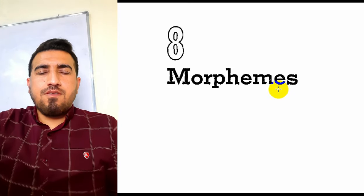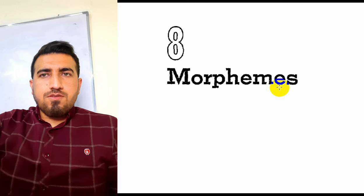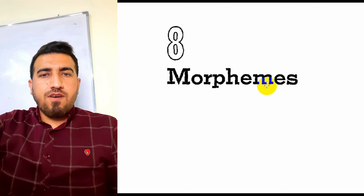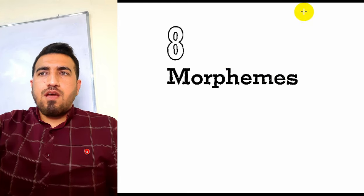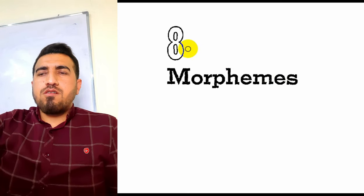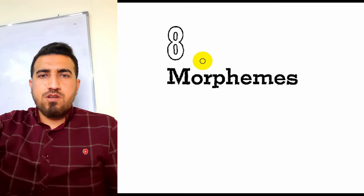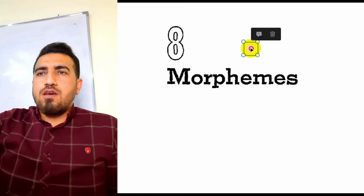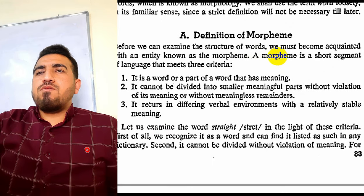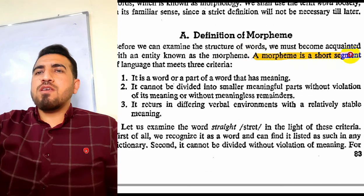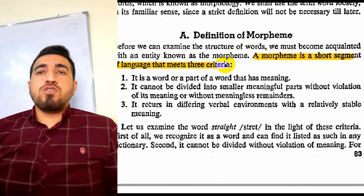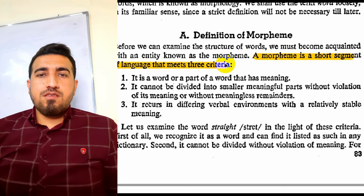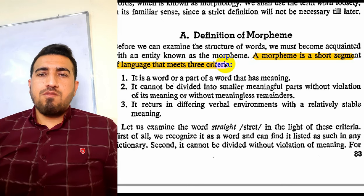Hello guys, welcome back to another video. Today we are going to talk about Chapter 8 on morphology and morphemes, as an introduction to English grammar. Chapter 8 is talking about morphemes, and today we are going to know what is meant by morpheme and morphemes. First of all, we have to know what a morpheme is. A morpheme is a short segment of language that meets three criteria — it is the smallest unit in morphology.